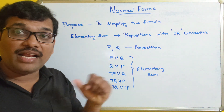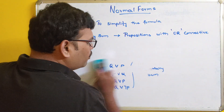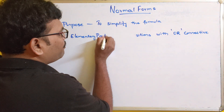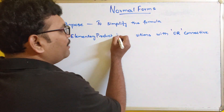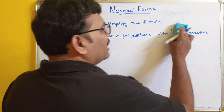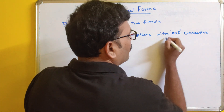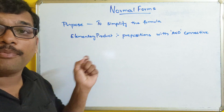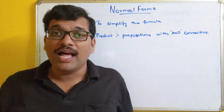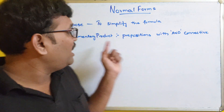This elementary sum will be used in our CNF and DNF. Now, similar to this, there is one more concept called elementary product. Propositions with an AND connective, that means conjunction, are called elementary products. So if simple propositions are connected with a conjunction, we can call them an elementary product.